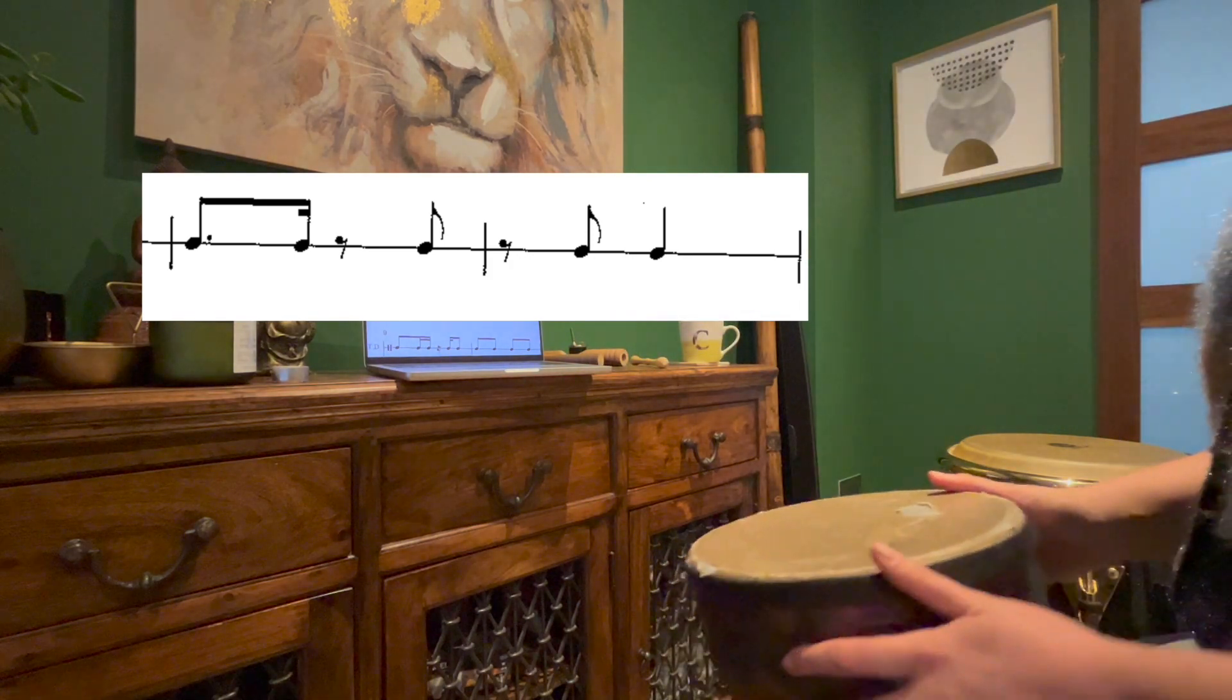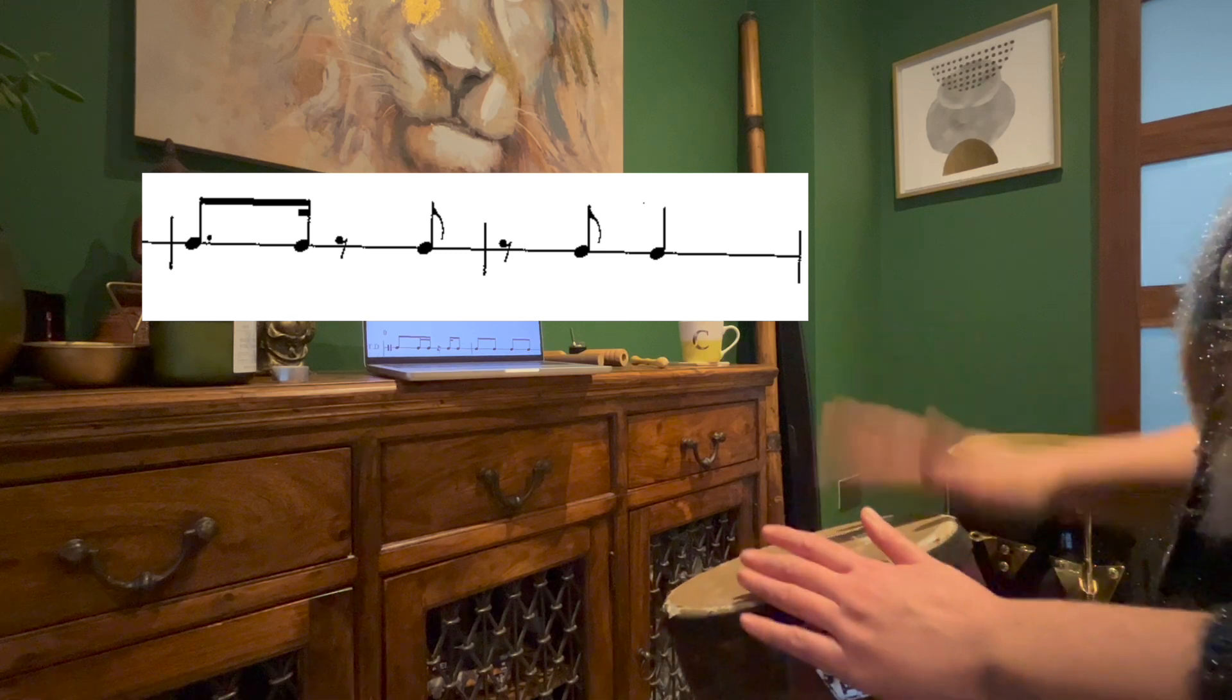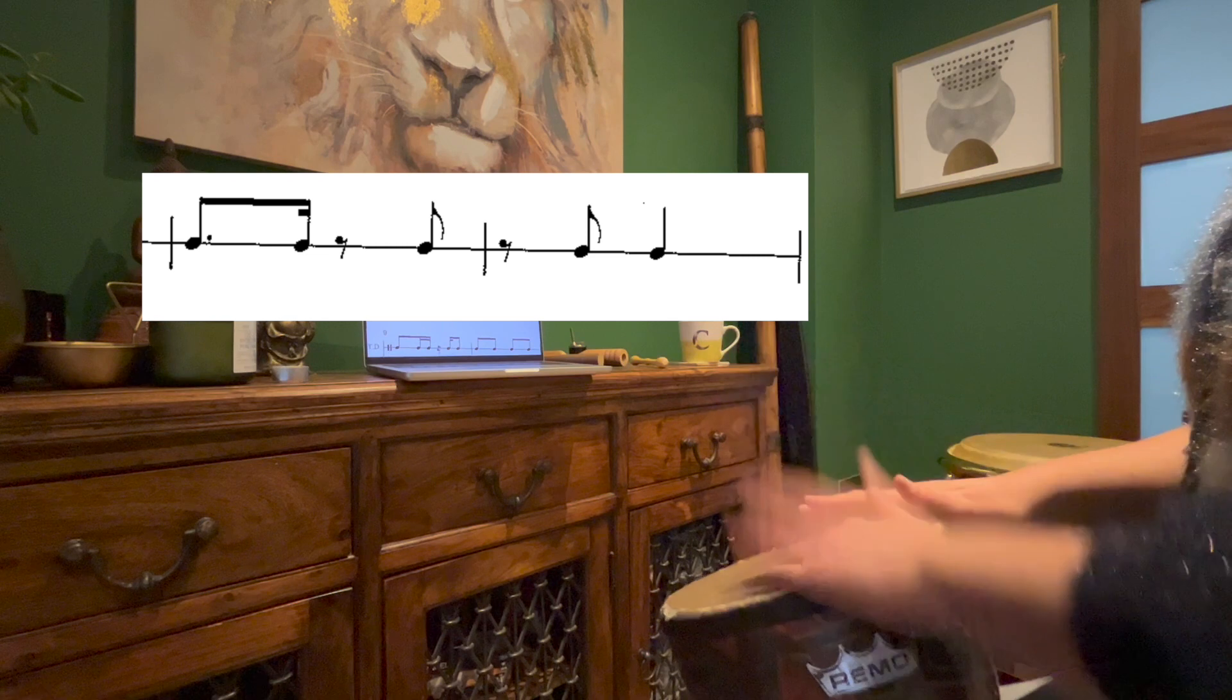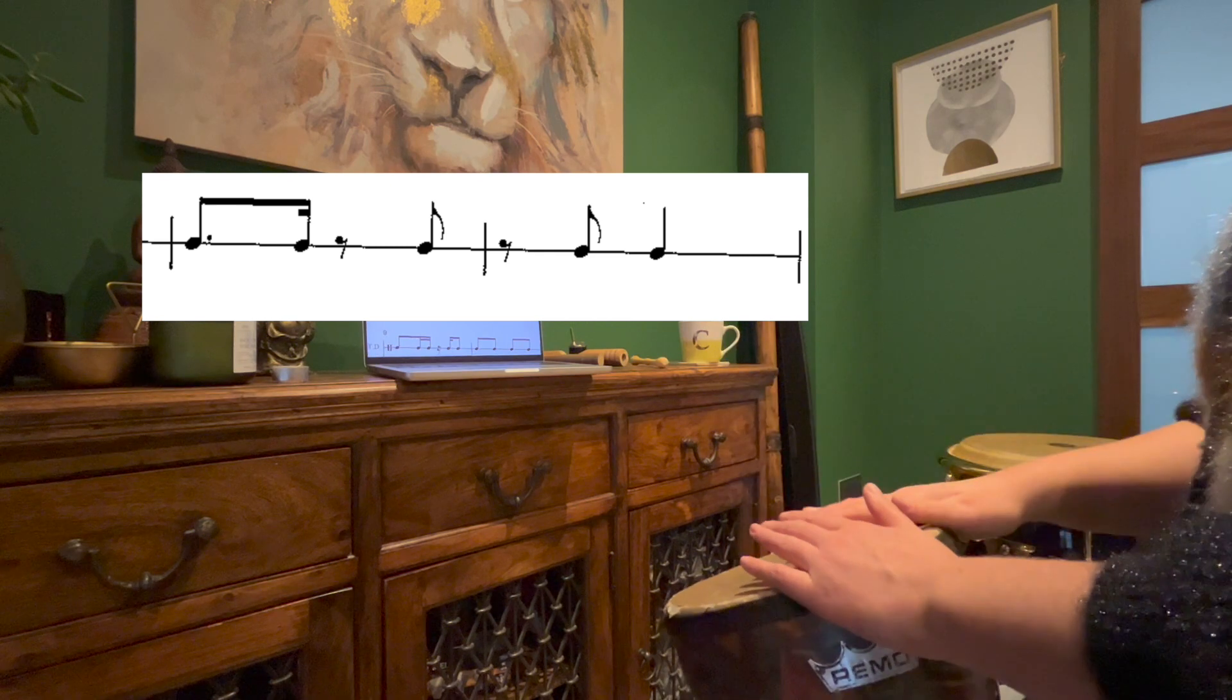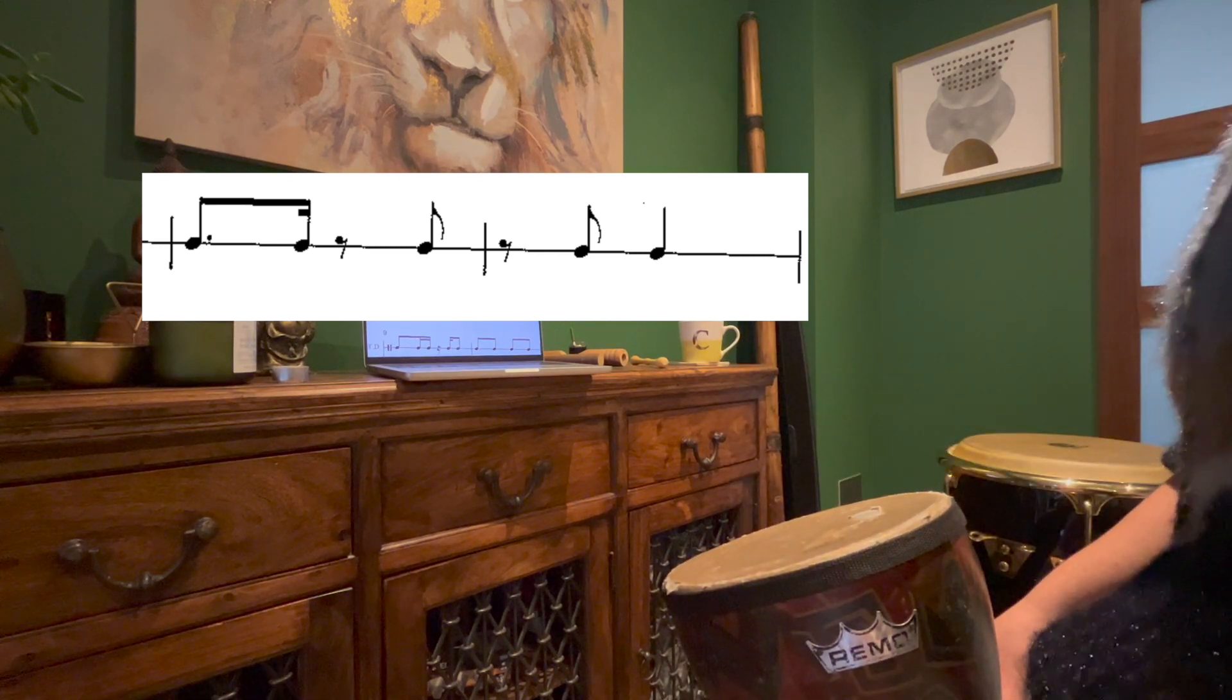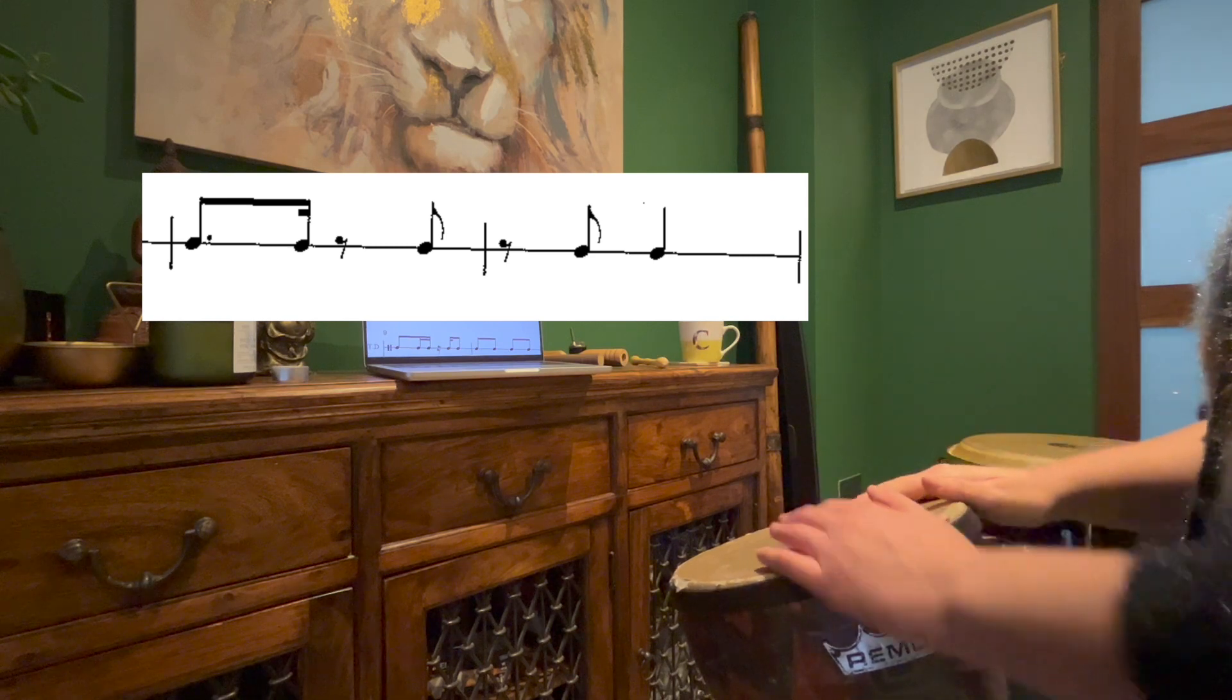So basically the second line is just that pattern on a drum. So one, two, and go. This is a really important groove in percussion music, so a great one to learn anyway. So the first bar is one, two, and go.